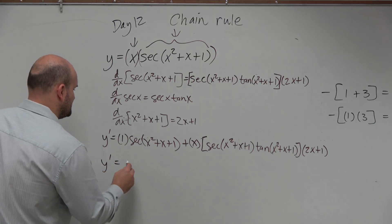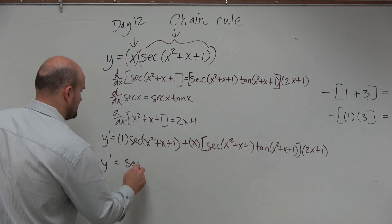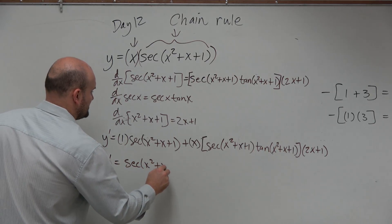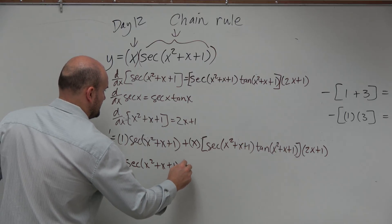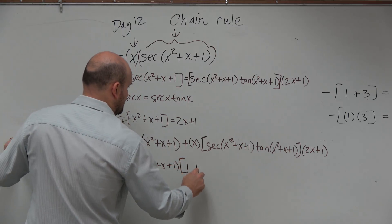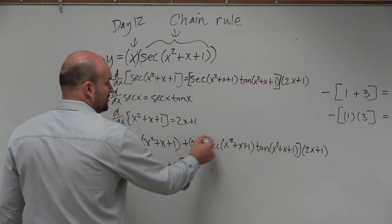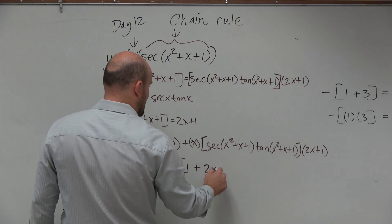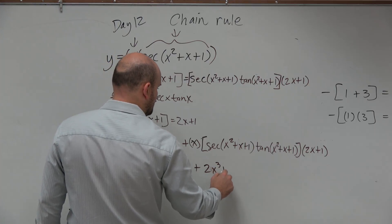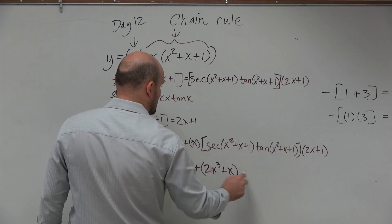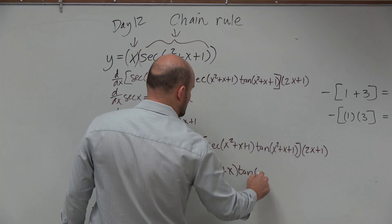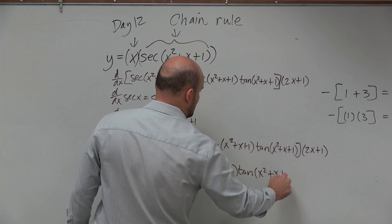You could always factor out a secant of x² + x + 1. When you do that, you'd have 1 plus x—oh actually, and then we could multiply the x times that, so that would be 2x² plus x times tangent of x² + x + 1.